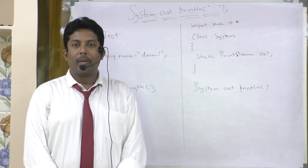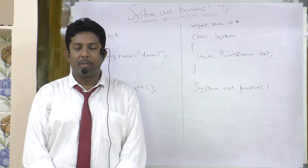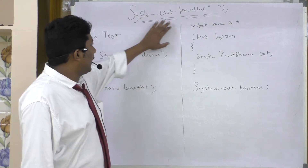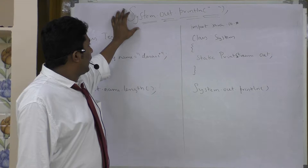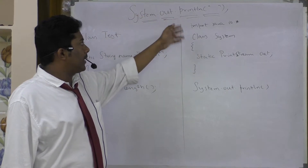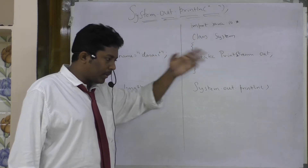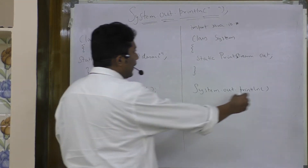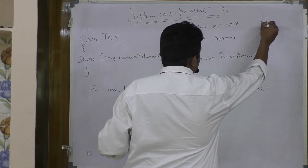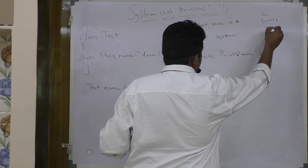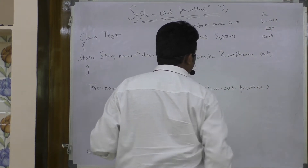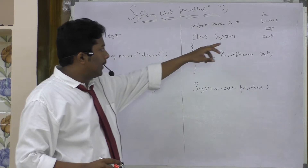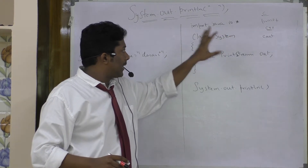In this lesson we are going to look into the statement which is very commonly used in all Java programs, which is system.out.println. Why do we need to write such a lengthy statement just to print some string or text to the output screen? In C we have printf, in C++ we have cout - many languages have simpler, shorter syntax equivalent to this.